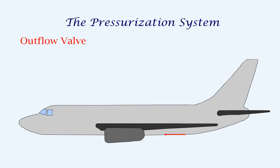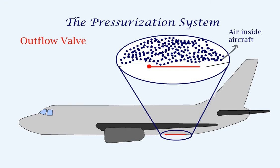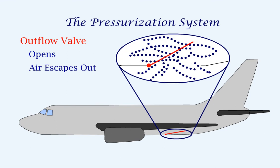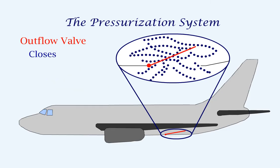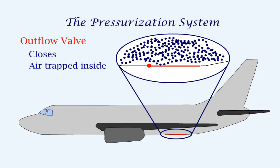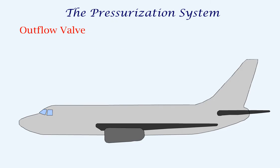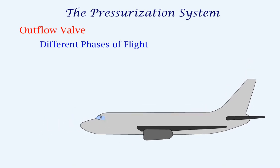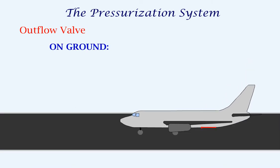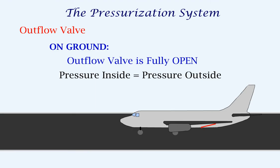Let's look at the outflow valve in more detail. When the outflow valve opens, the air inside the aircraft will escape and the pressure inside the aircraft will decrease. When the outflow valve closes, the air will be trapped inside the aircraft, causing the pressure to increase. The outflow valve will open or close depending on the phases of flight. On the ground, the outflow valve is fully open so that the pressure inside the aircraft is the same as the pressure outside the aircraft.